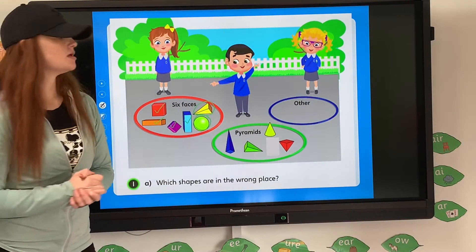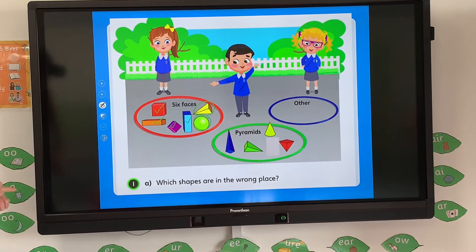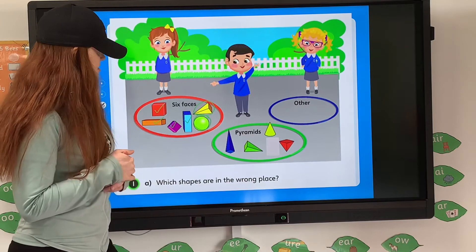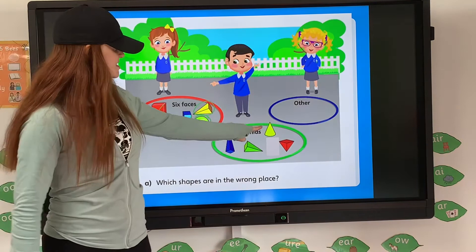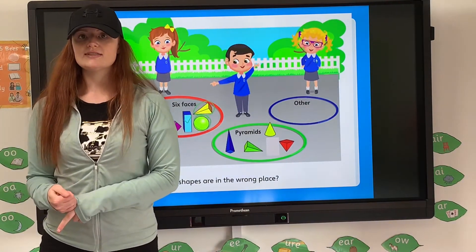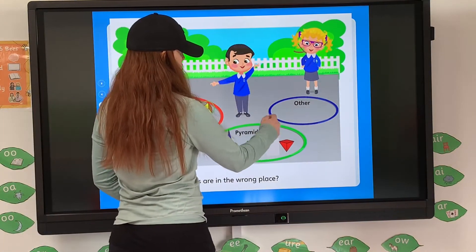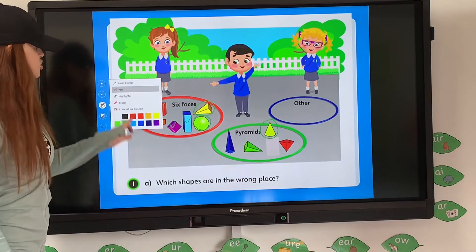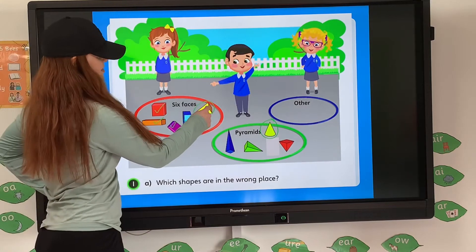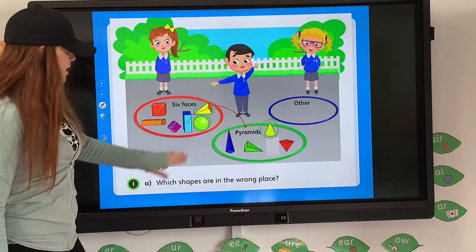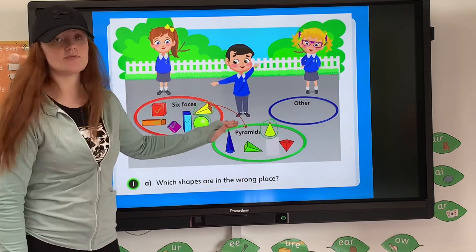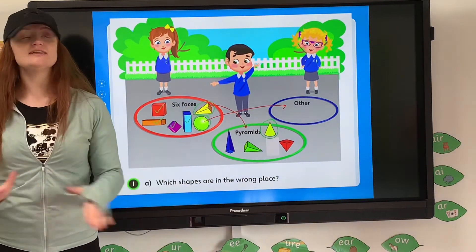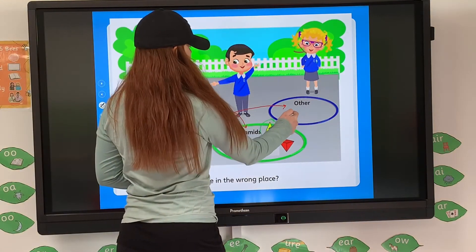Then looking at the pyramid section: yes, that's a square base pyramid — quite a thin, narrow one. Yes, another square base pyramid. The red one is another square base pyramid. But the yellow one isn't a pyramid at all — it's actually a cone, like an ice cream cone. So I know that's not going to stay in the pyramid section. Now I need to decide where the square base pyramid (from the six faces section), the sphere, and the cone should go. The square base pyramid should be moved into the pyramids section. The sphere doesn't have six faces and isn't a pyramid, so it has to go into 'other.' The cone is also not a pyramid and doesn't have six faces, so it goes into 'other' as well.